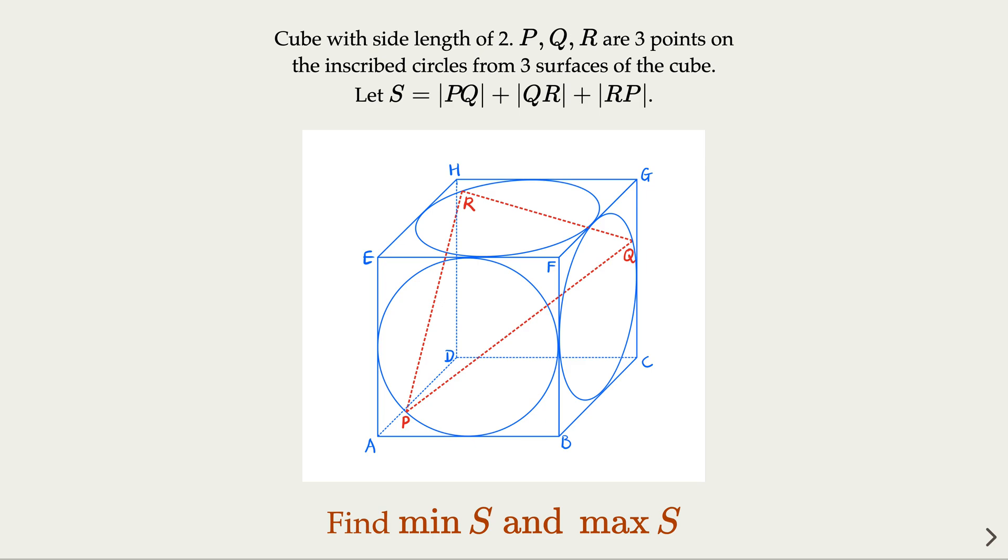This is the problem setup. We have a cube with side length of 2, and we have three circles inscribed on three surfaces here, as marked in the diagram. We have points P, Q, R as three points on those three circles. And we try to find min and max of the perimeter of the triangle formed by points P, Q, and R.